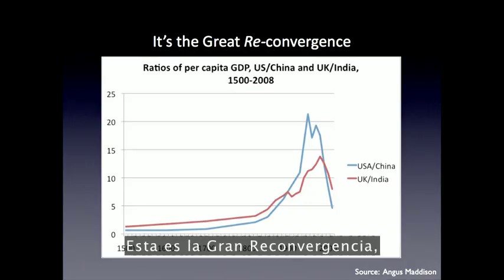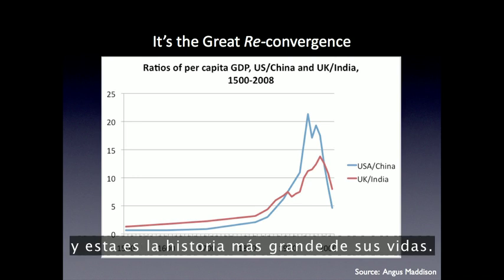Why? Because the killer apps can be downloaded — it's open source. Any society can adopt these institutions, and when they do, they achieve what the West achieved after 1500. Only faster. This is the Great Reconvergence, and it's the biggest story of your lifetime.